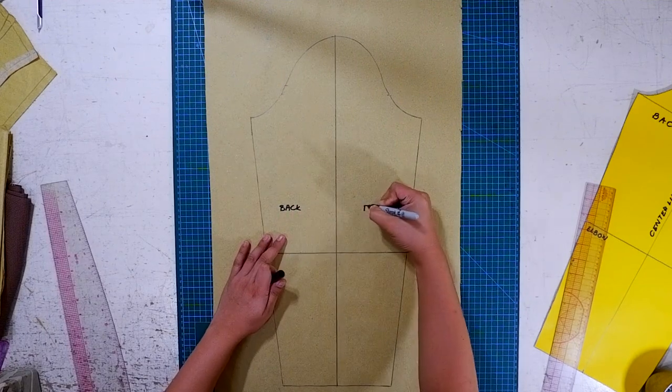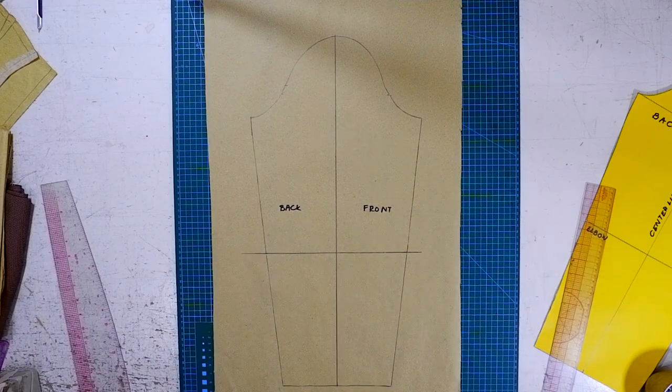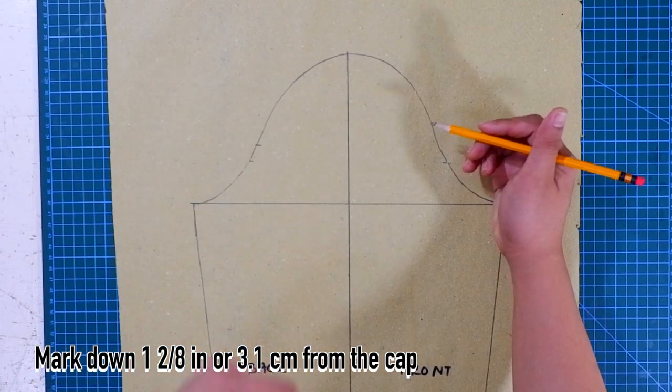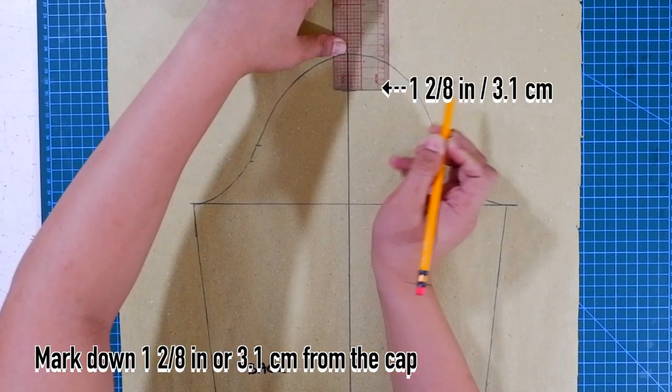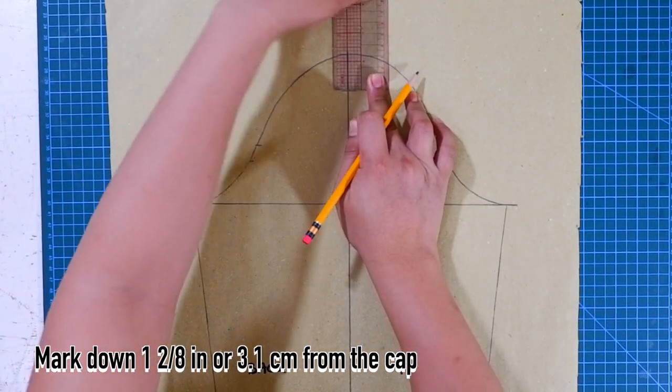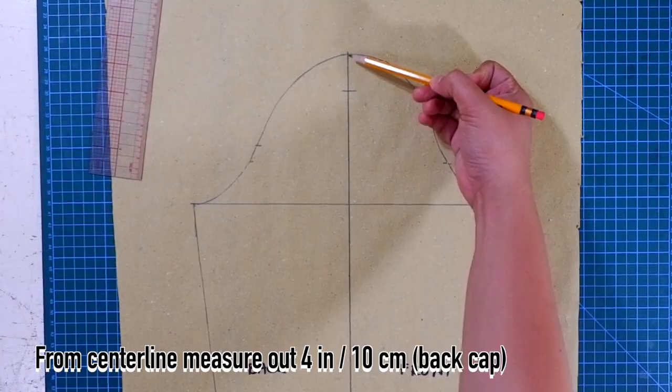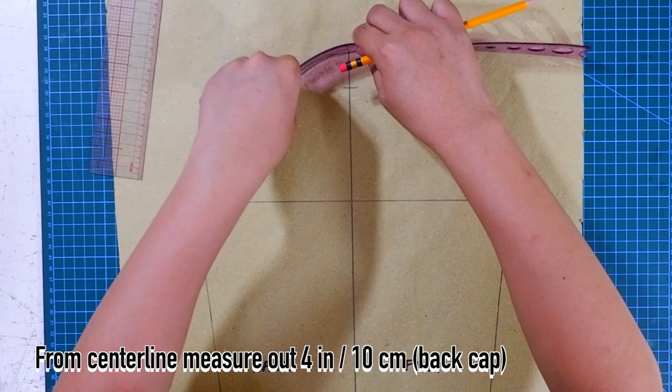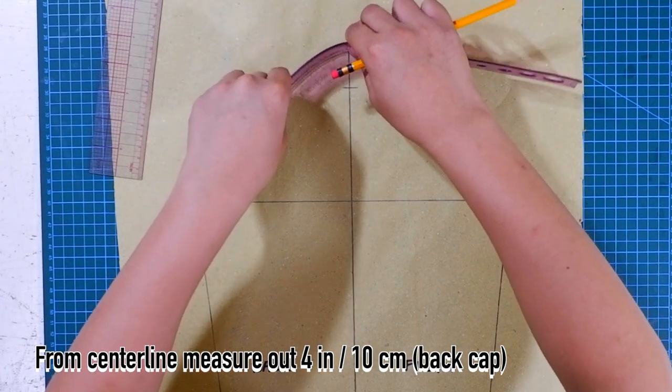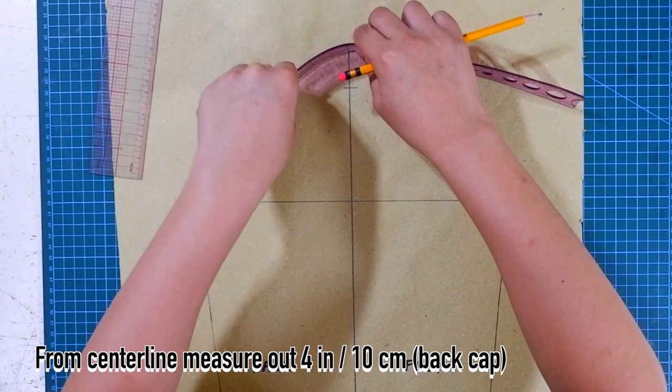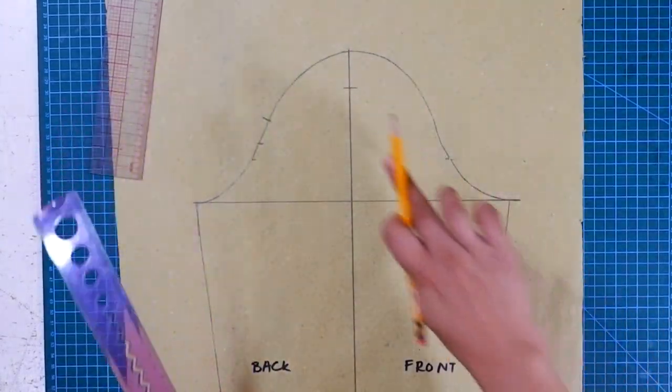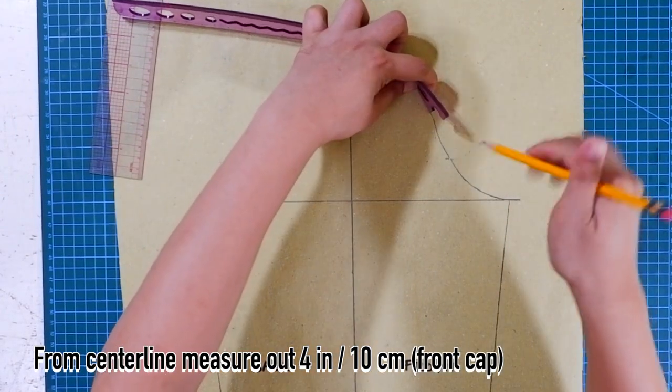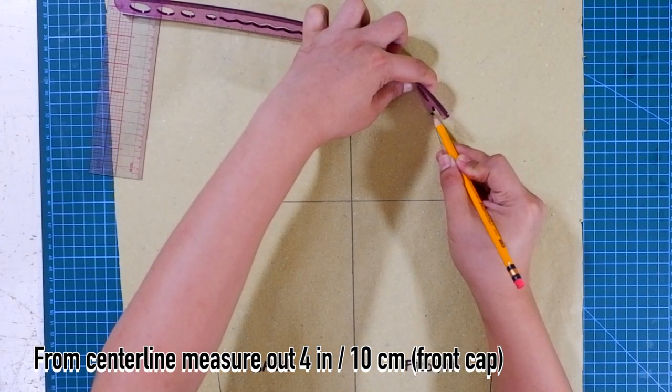So now that we have traced our sleeve block, let's start the design for our pattern. From the cap of the sleeve, mark down 1 4/8 inches or 3.1 centimeters and mark this measurement. Going back to the center line, using a flex ruler, measure out 4 inches or 10 centimeters at the back of the sleeve. Don't forget to follow the curve of the cap and mark the measurement. Next, let's do the same thing for the front part of the sleeve and mark the measurement.